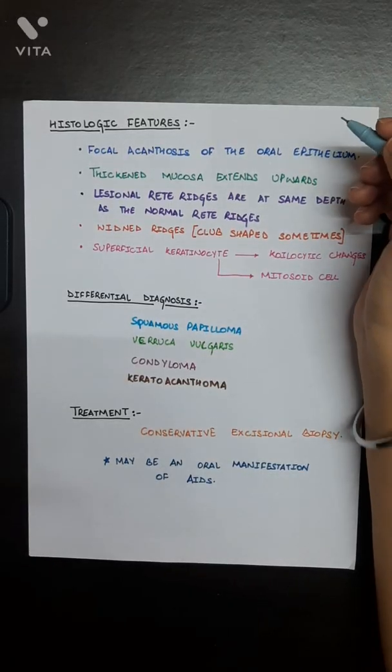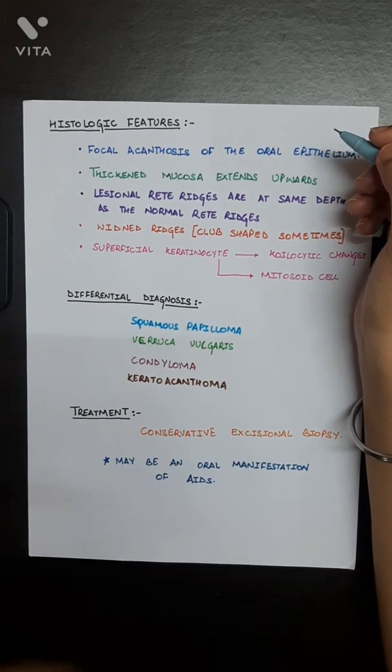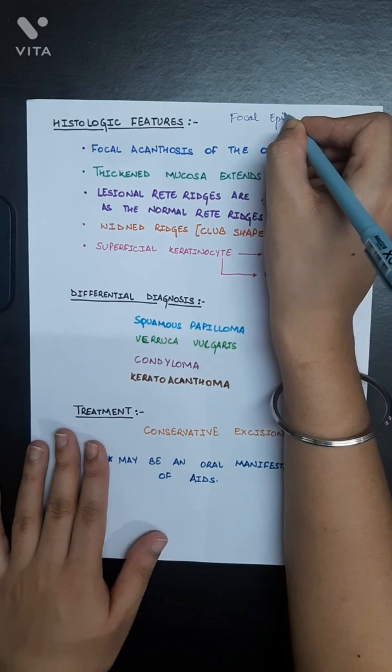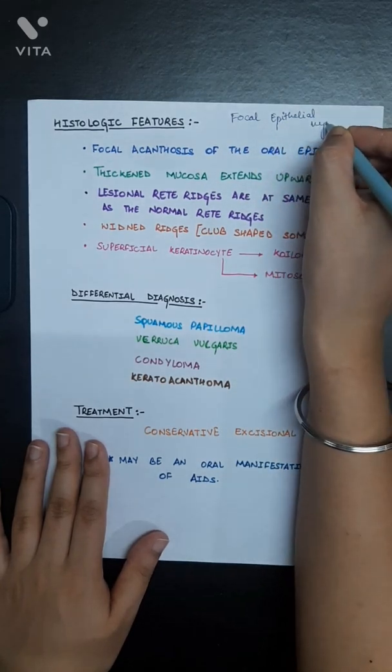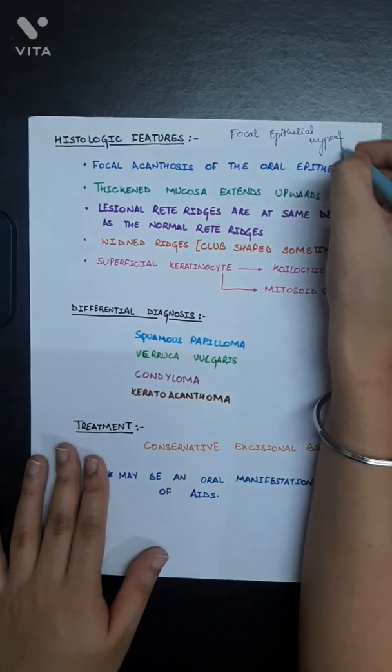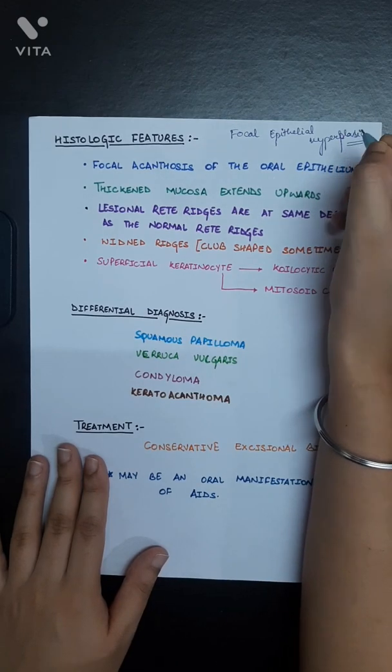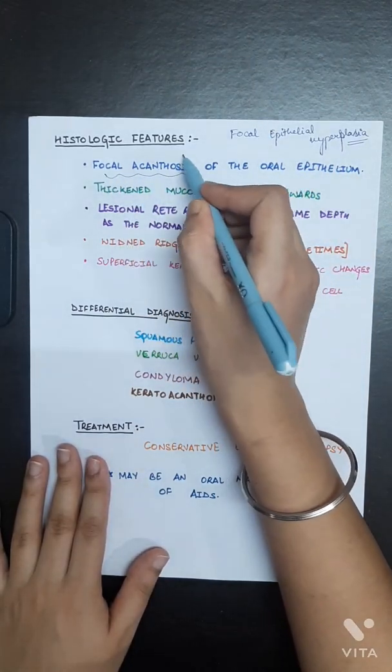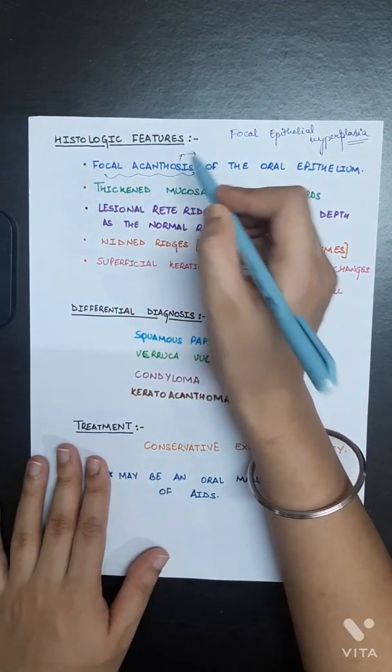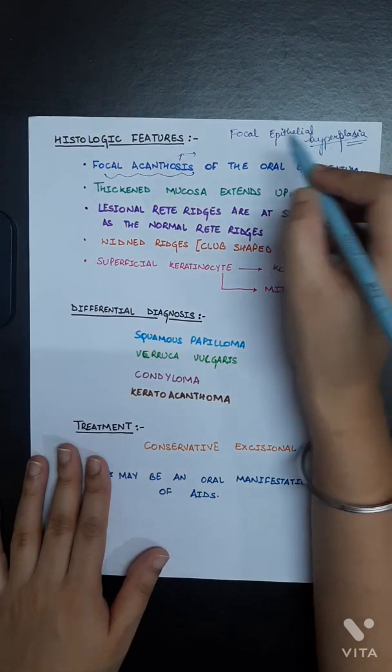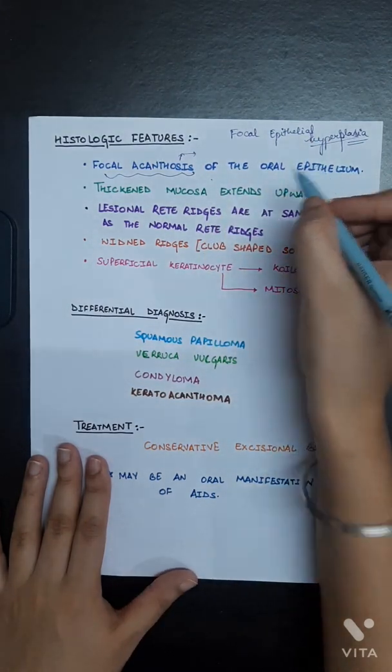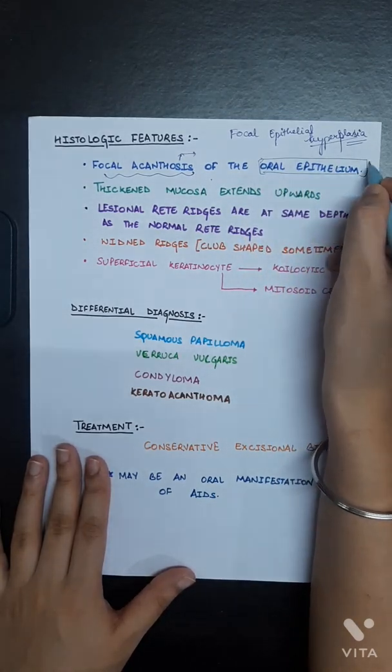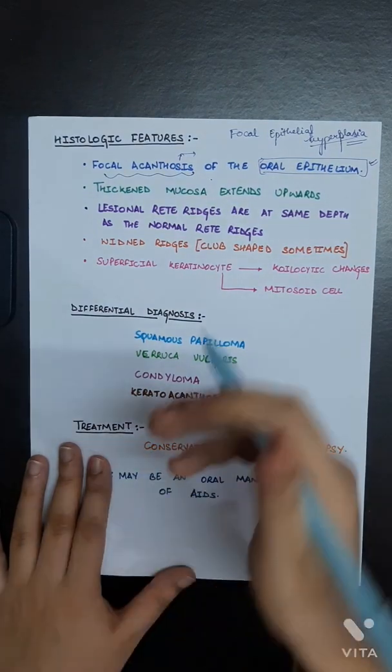Now the histological features. The name suggests its histological features itself. Focal acanthosis means increase in the number of cell layers. Hyperplasia, increase in the number of cells will be there. You will be able to see this increase in the number of cells of the epithelium in histology.